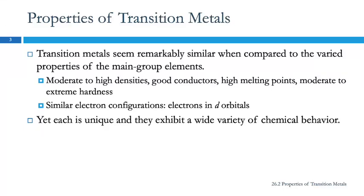These involve transition metals. Transition metals seem very similar to each other compared to all the main group elements, because in the main group elements we've got some gases and a bunch of non-metals, whereas all the transition metals are metals. They seem very similar — they have moderate to high densities, they're good conductors, they have high melting points, moderate to extreme hardness, and their electron configurations are similar.